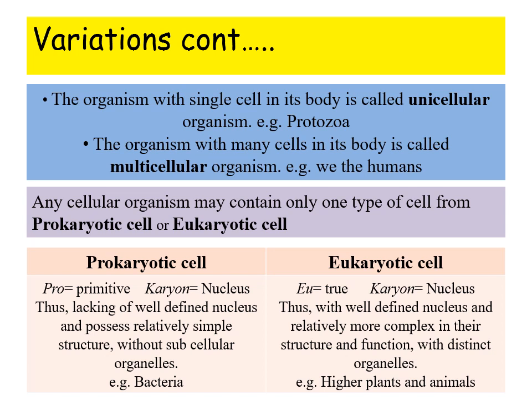If an organism functions well as an organism with a single cell, it is called a unicellular organism — for example, the protozoan Amoeba. An organism with many cells is called a multicellular organism; the best example is humans. Multicellular organisms differ greatly from unicellular ones with a significant division of labor among the cells. Unicellular organisms may contain only one type of cell, either prokaryotic or eukaryotic. In this presentation we are not going into the details of prokaryotes and eukaryotes, as subsequent presentations by different faculties will discuss them in detail.